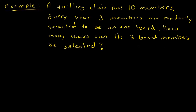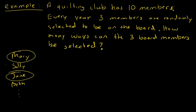Let's do another example. We have a quilting guild with 10 members. Every year, three members are randomly selected to be on the board. How many ways can the board members be selected? So we have members like Mary, Sally, Jane, Beth, and so on — 10 members total — and three of them will be selected.